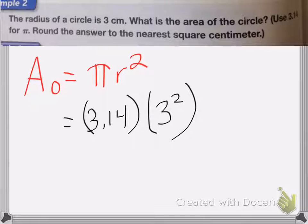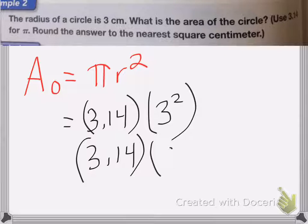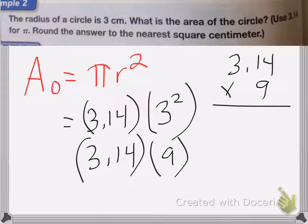So we first are going to do my square because square comes first. So it's going to be 3.14 times by 3 squared is 9. So let's go ahead and do that. 3.14 times by 9. 9 times 4 is 36. Carry my 3. 9 times 1 is 9 plus 3 is 12. Carry my 1. 9 times 3 is 27 plus 1 is 28.